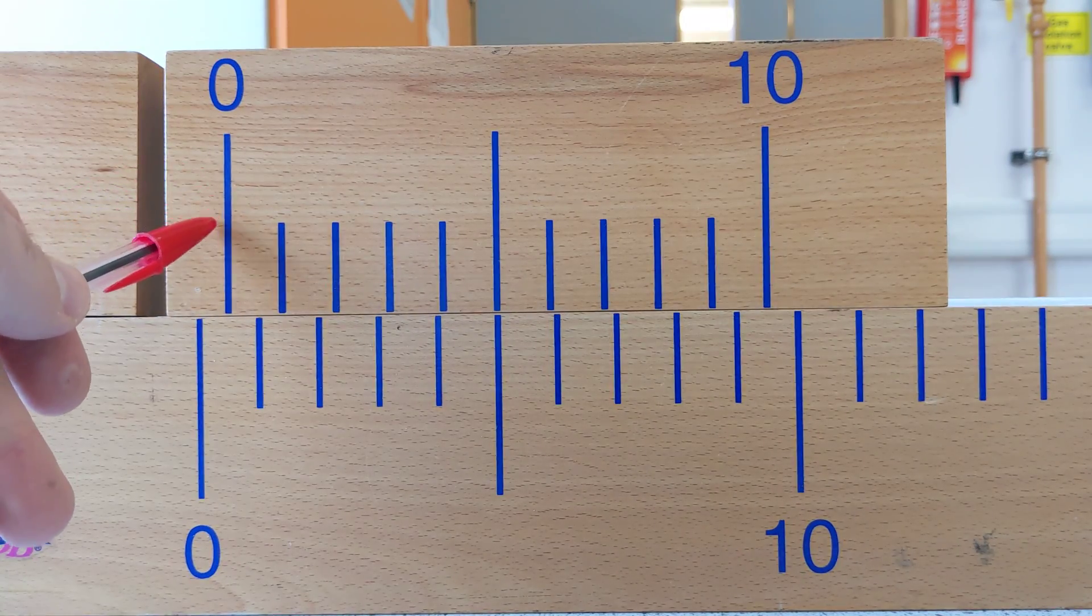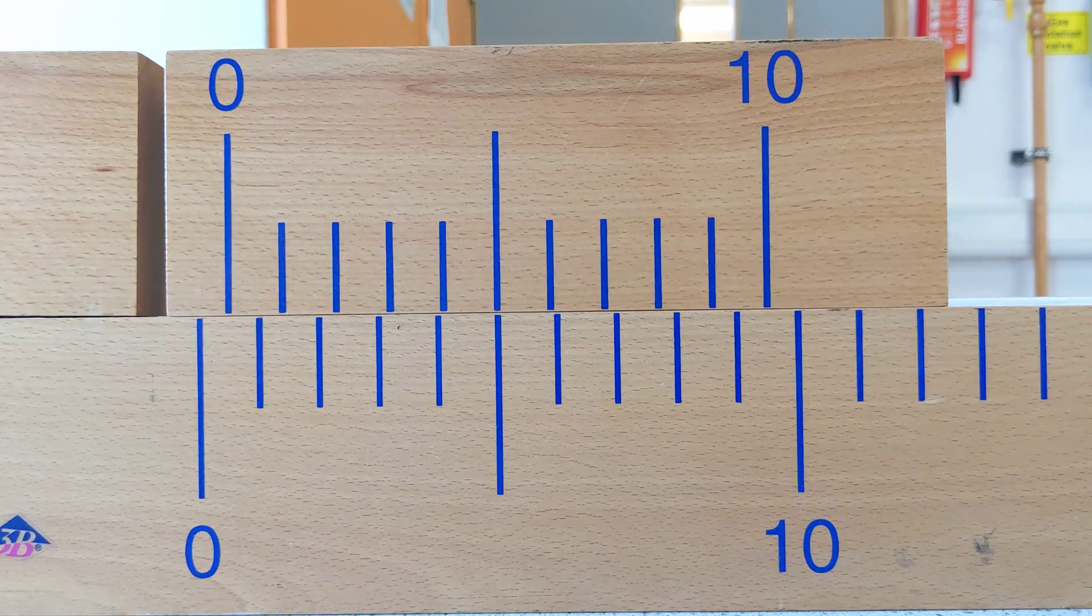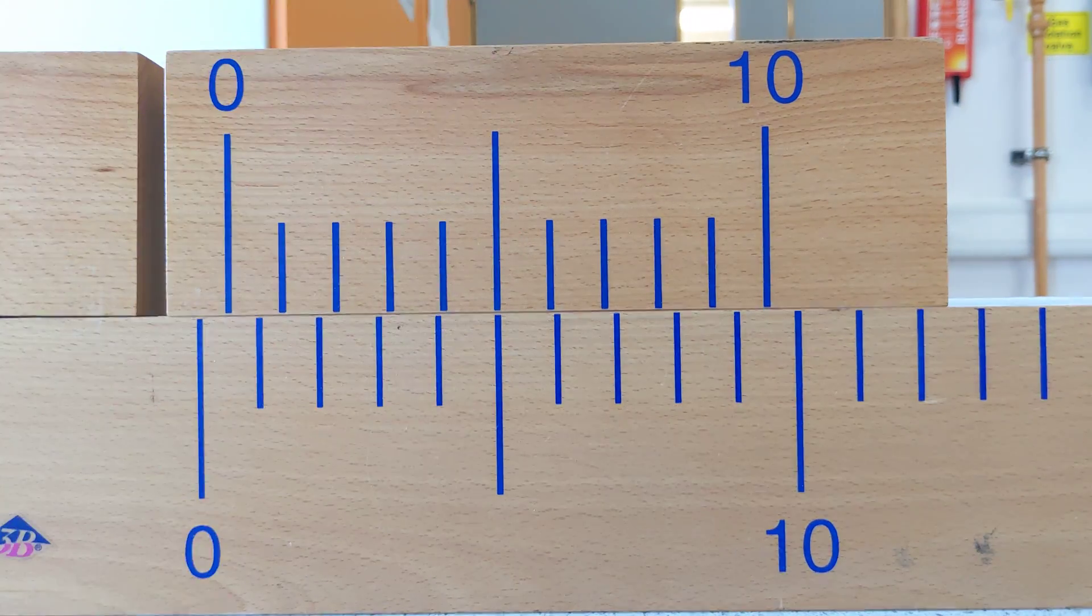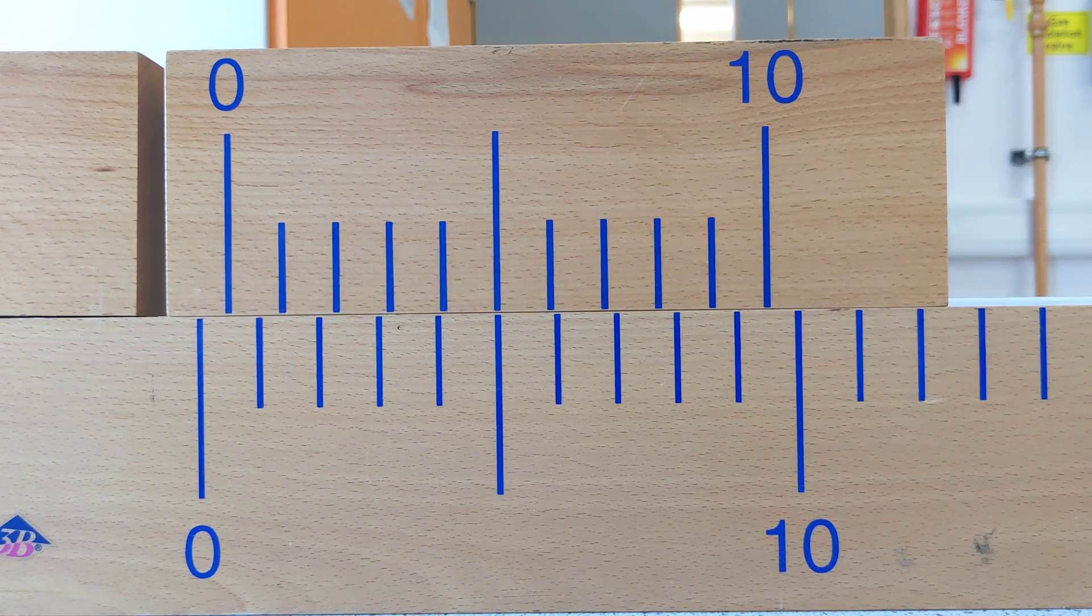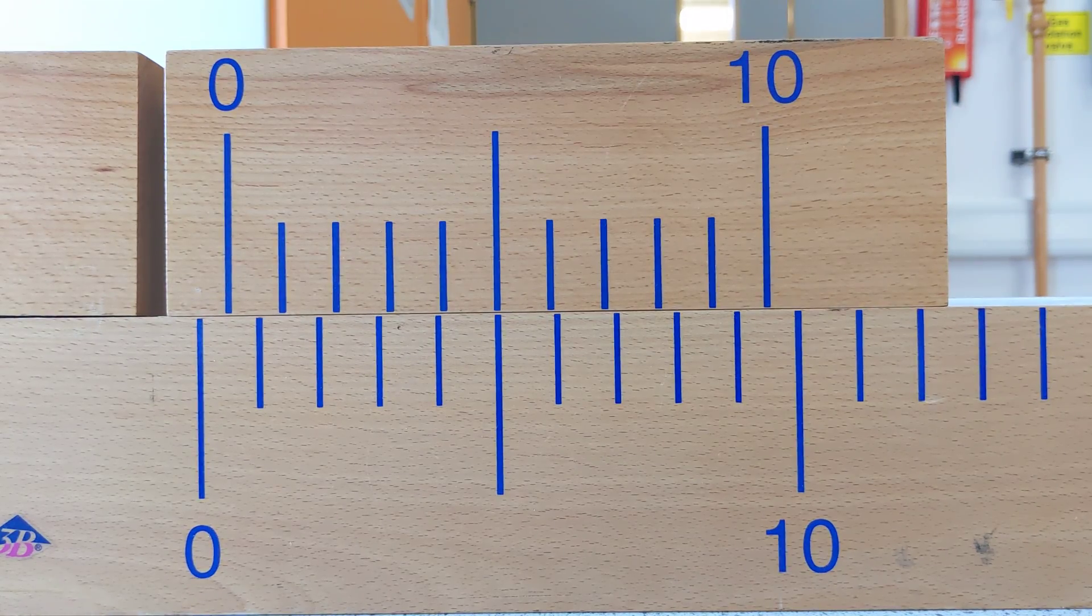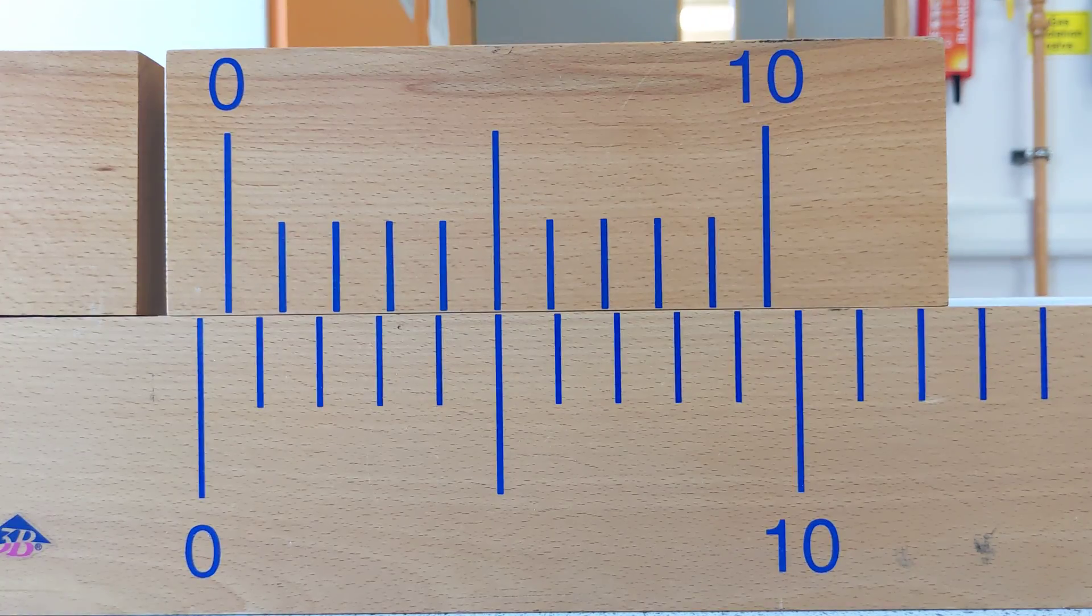And I know it's five tenths because I can count on the vernier scale. One, two, three, four, five. So this is five tenths of the way between the zero and the one on the main scale. If the main scale is showing centimeters, this is half a centimeter. If the main scale is showing millimeters, this is half a millimeter.